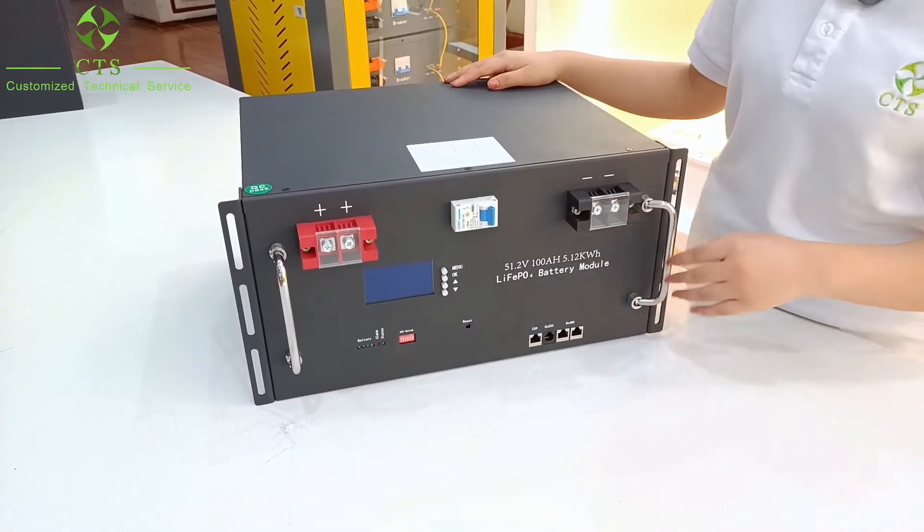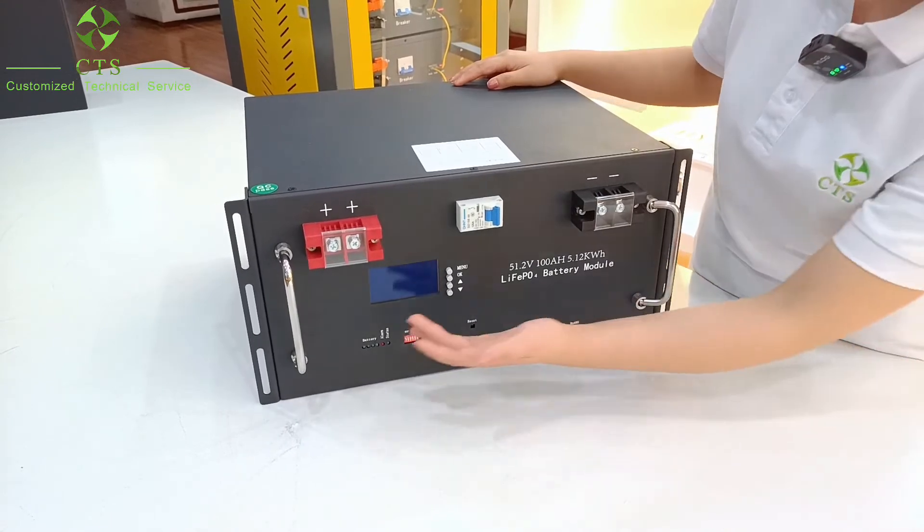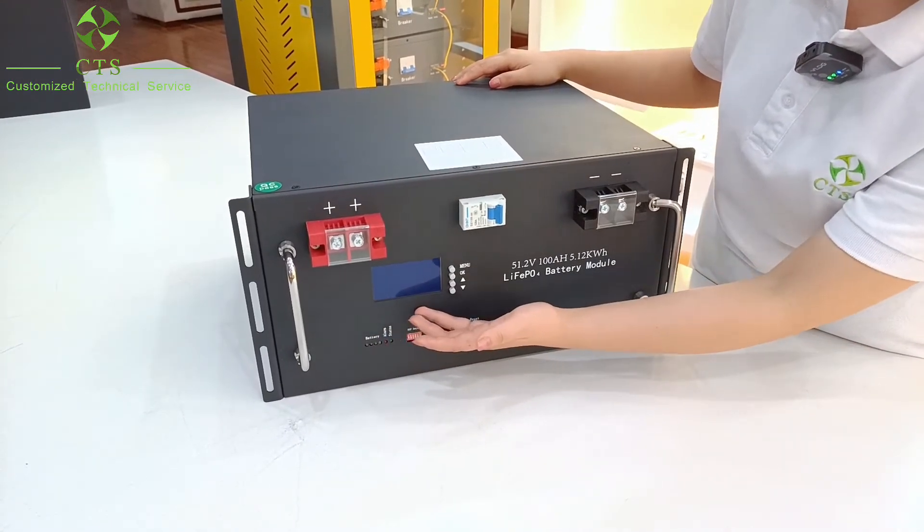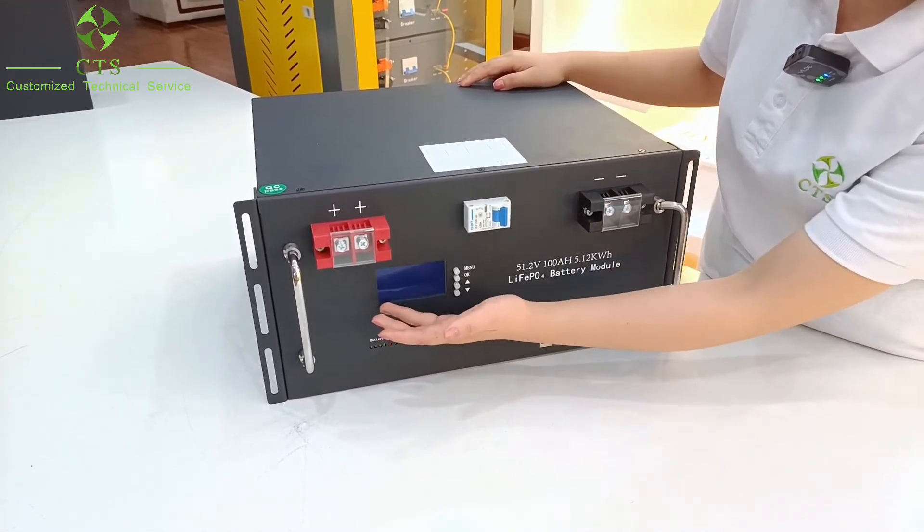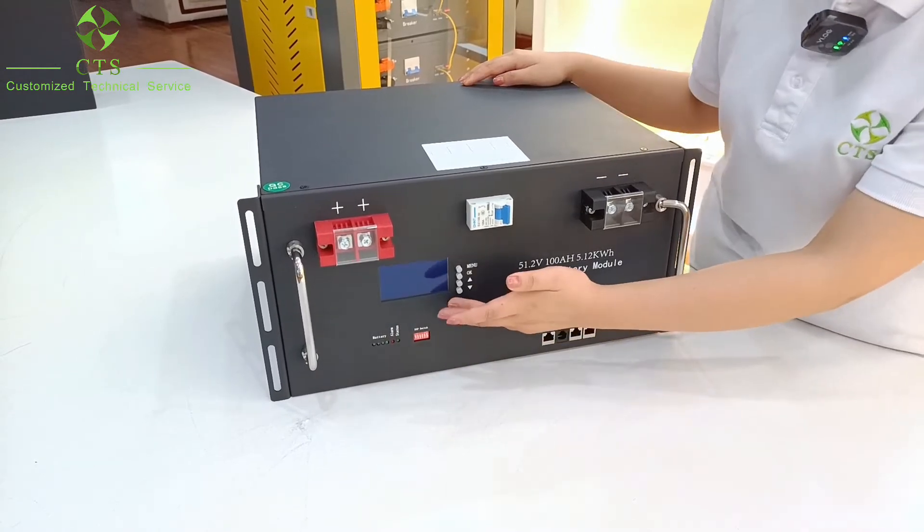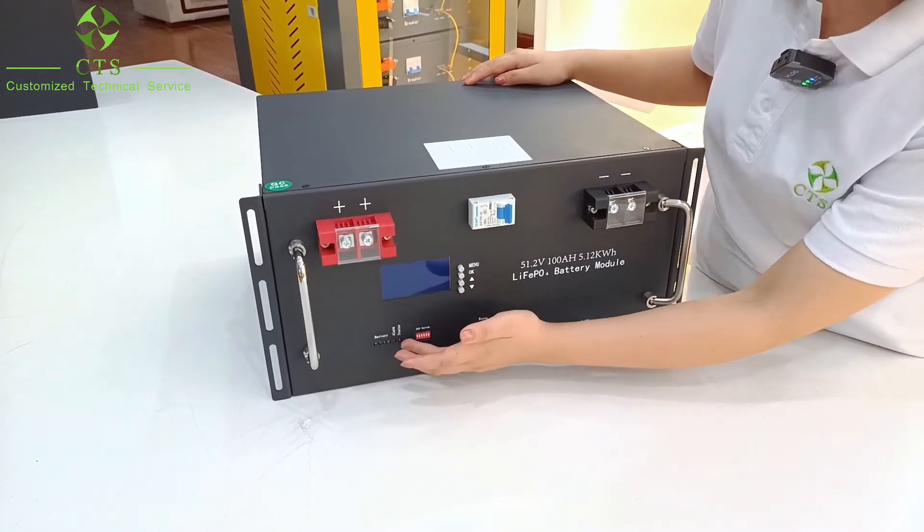If you need to know the condition of the battery, you can see the main parameters through the LCD screen. You can see the battery SOC. Meanwhile, there are running and alarming lights.